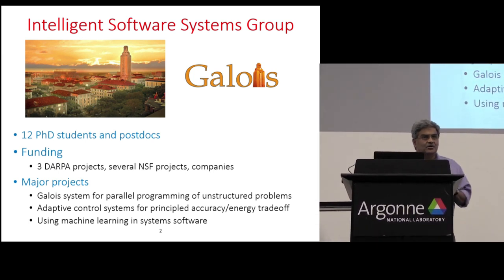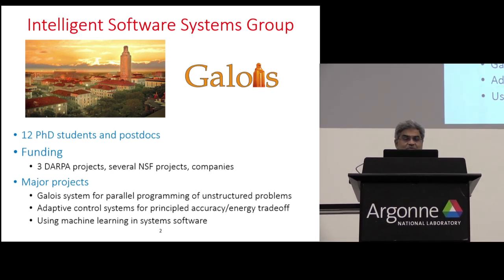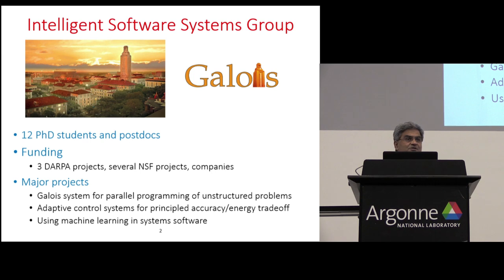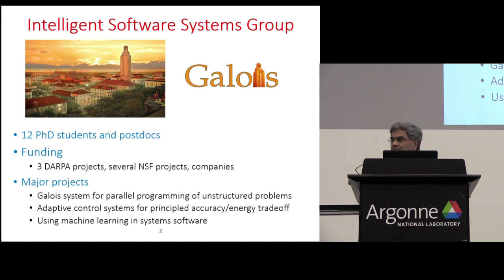Here's one slide on my group. We call ourselves the Intelligent Software Systems Group and have roughly about 12 PhD students and postdocs. Funding comes from three large DARPA projects, several NSF projects, and we work with a lot of companies in the Austin area. There are three main projects funded by these three DARPA grants. One is what we call the Galois system — a system for parallel programming of unstructured problems — and that's essentially what I want to talk about today.